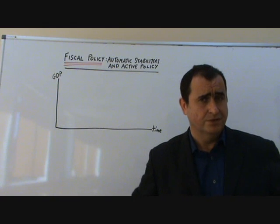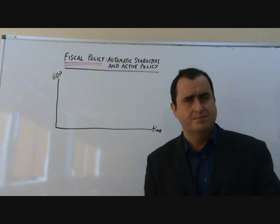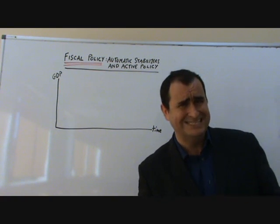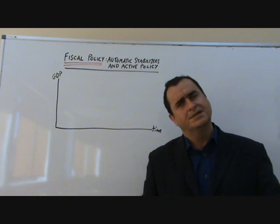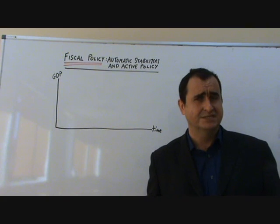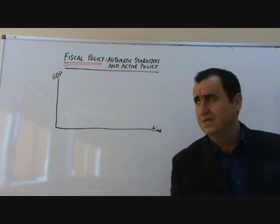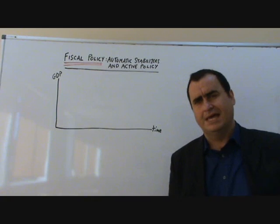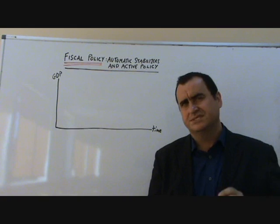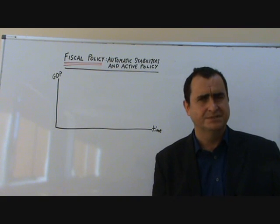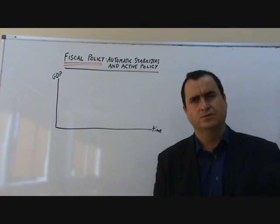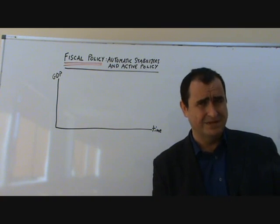If they want to expand, if they want to give the economy a boost, they're going to spend more and tax less. If they want to hold back demand in the economy, if they're scared of overheating, they might tighten up their fiscal policy by cutting government spending and maybe raising tax, leaving people with less disposable income. But that's a simple overview of fiscal policy. Some fiscal policy is actively carried out by the government, and there are also automatic fiscal impacts, or what we call automatic stabilisers in the economy.